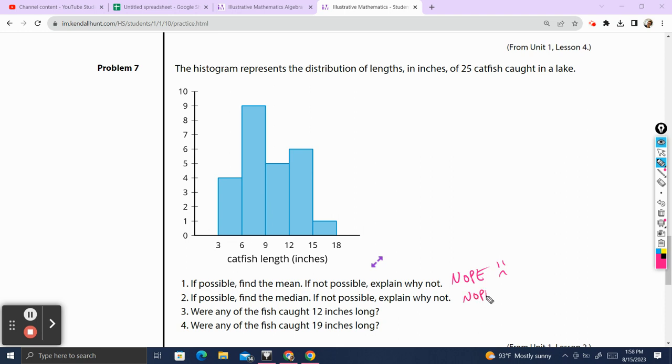Were any of the fish caught 12 inches long? Well, we know that there were fish between 12 and 15 and between 9 and 12. We don't actually know if one was exactly 12 inches long. Like we just don't. It could be that we had a bunch that were 13.